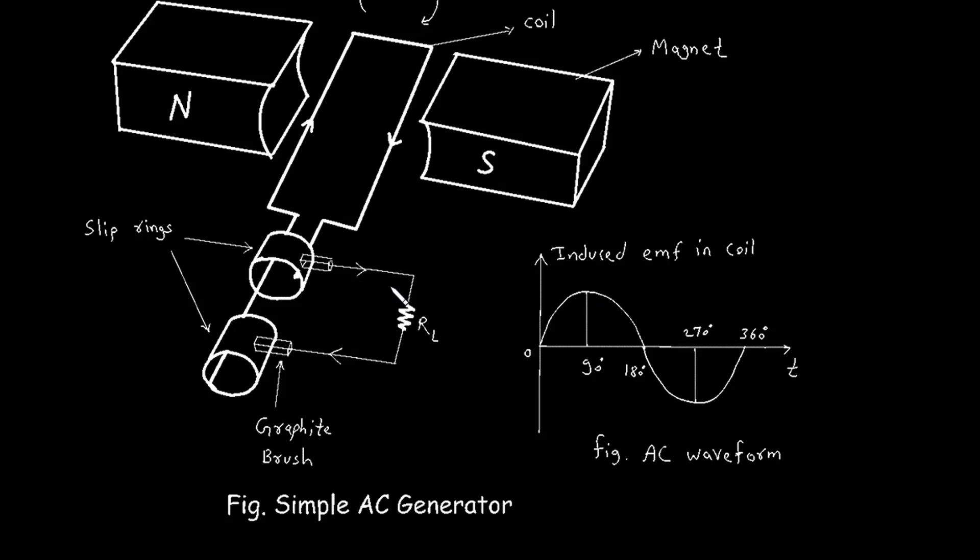So we are getting alternating current because of the alternating voltage. Alternating voltage is produced between these two terminals. This is the simple AC generator.